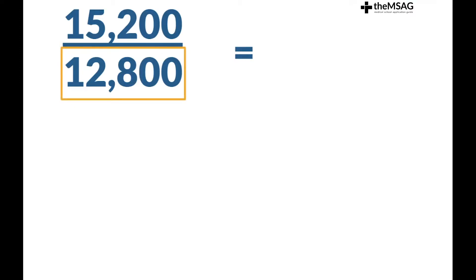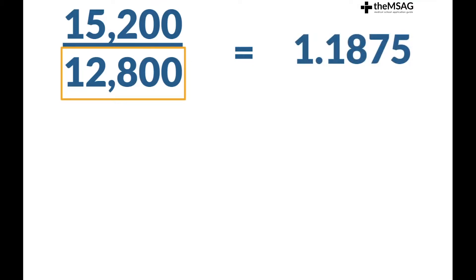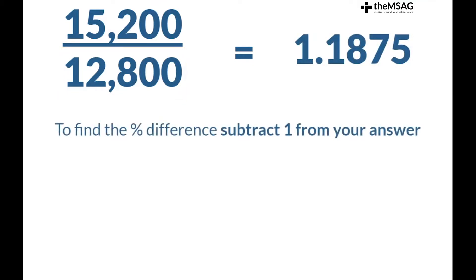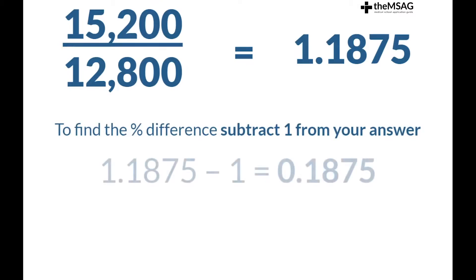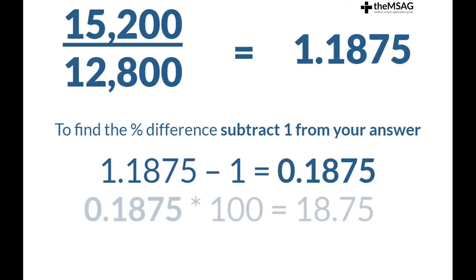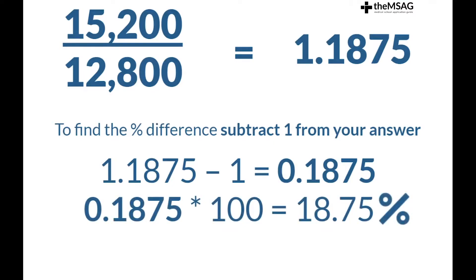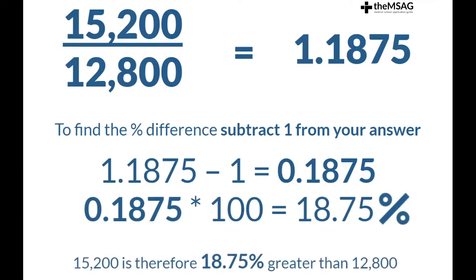This gives us 1.1875. To find the percentage difference, you need to subtract 1 from your answer: 1.1875 minus 1 equals 0.1875. Multiply by 100 to change this to a percentage. Therefore, 15,200 is 18.75 percent greater than 12,800.